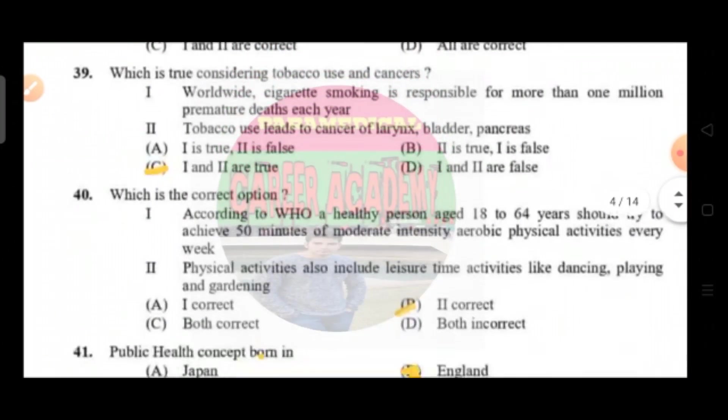Question number 39: which is true considering tobacco use and cancer. Option A — worldwide, smoking is responsible for more than one million premature deaths each year; option B — tobacco use leads to cancer of the larynx, bladder, and pancreas. The correct answer is that option one and two are true.